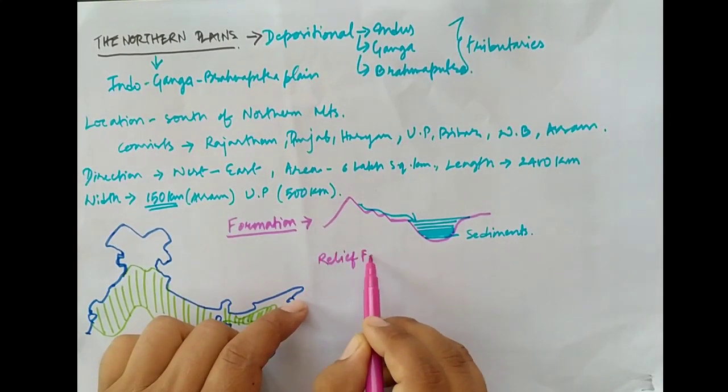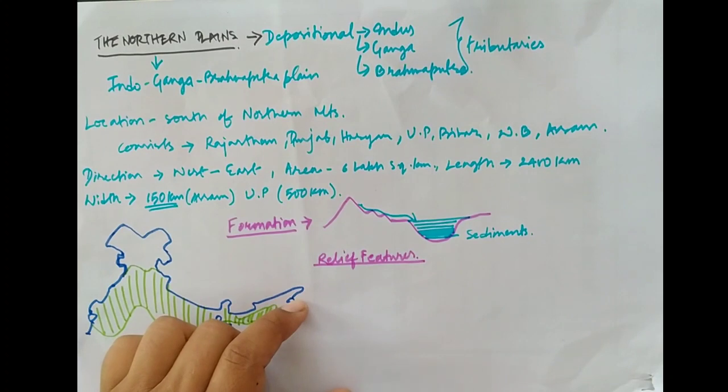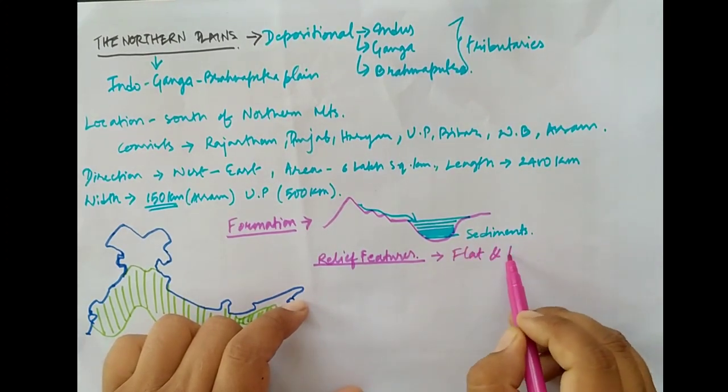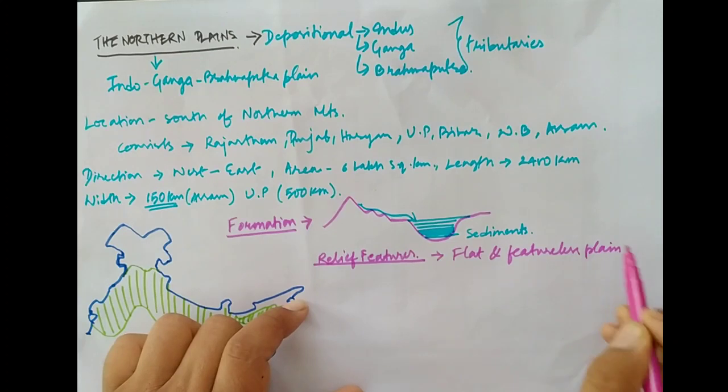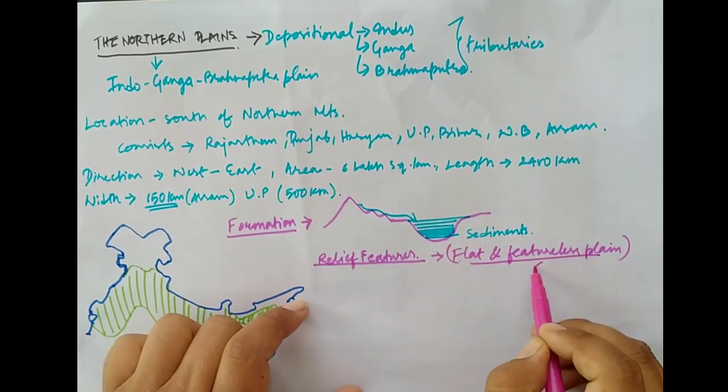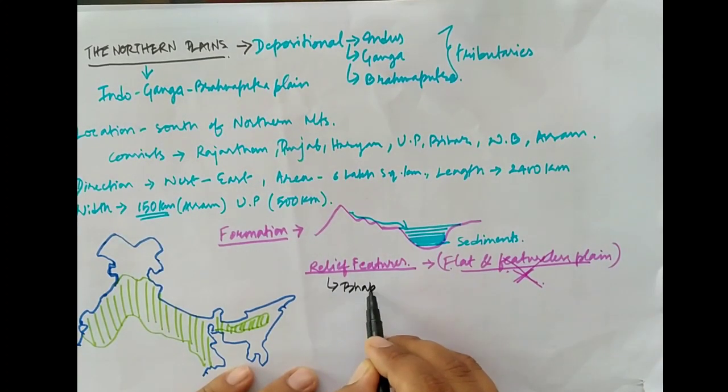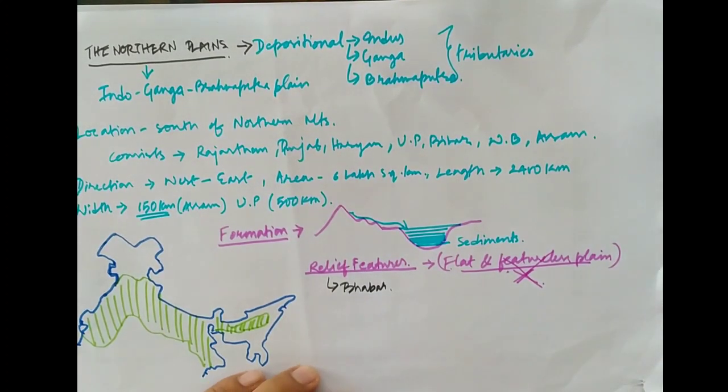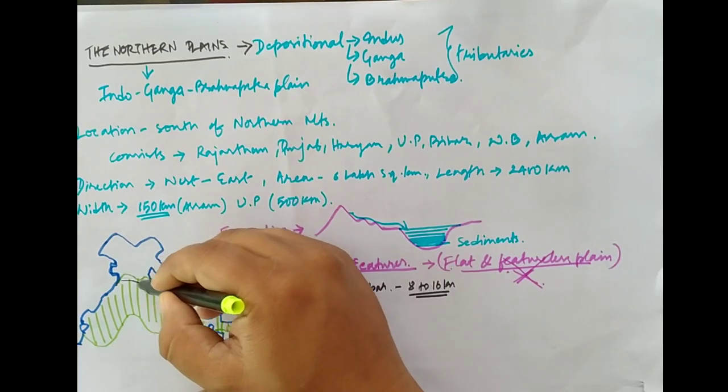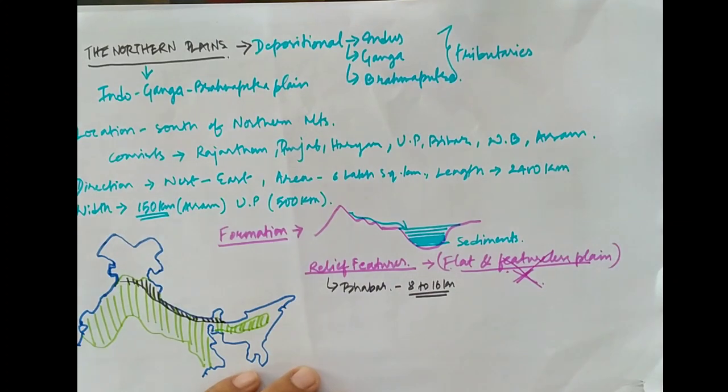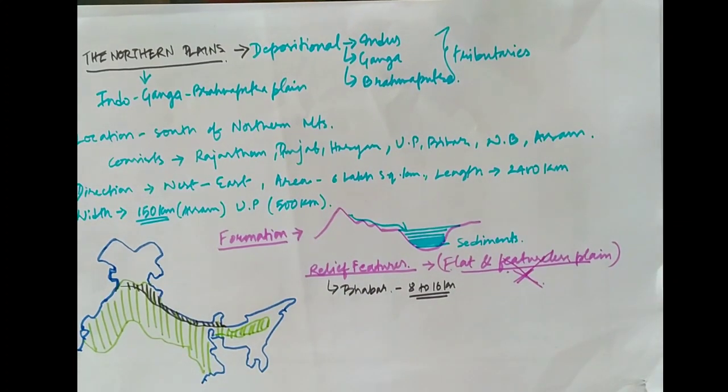Now let us talk about the relief features of northern plains. Some geographers think that northern plains is just a flat land topography without any features, but that is absolutely wrong. The northern plains also have relief features. Bhabar: it is 8 to 16 kilometers broad and lies to the south of the Siwalik mountains. Many streams originate in the Siwalik mountains but disappear in the Bhabar region because of its porosity.